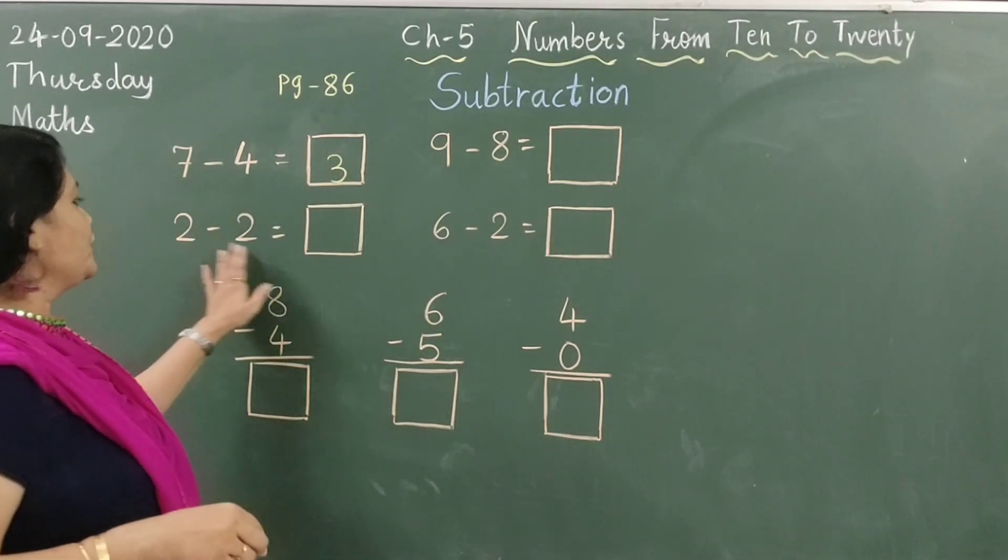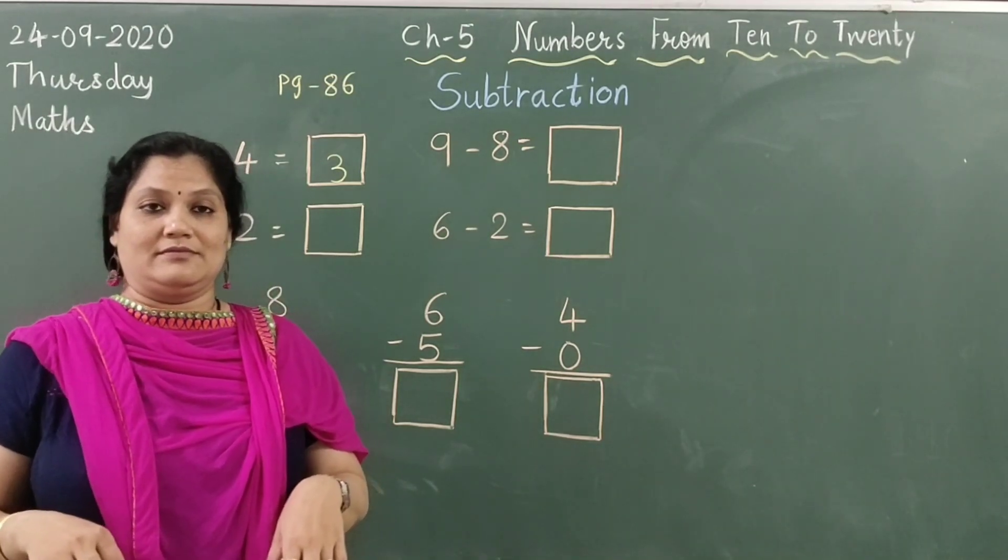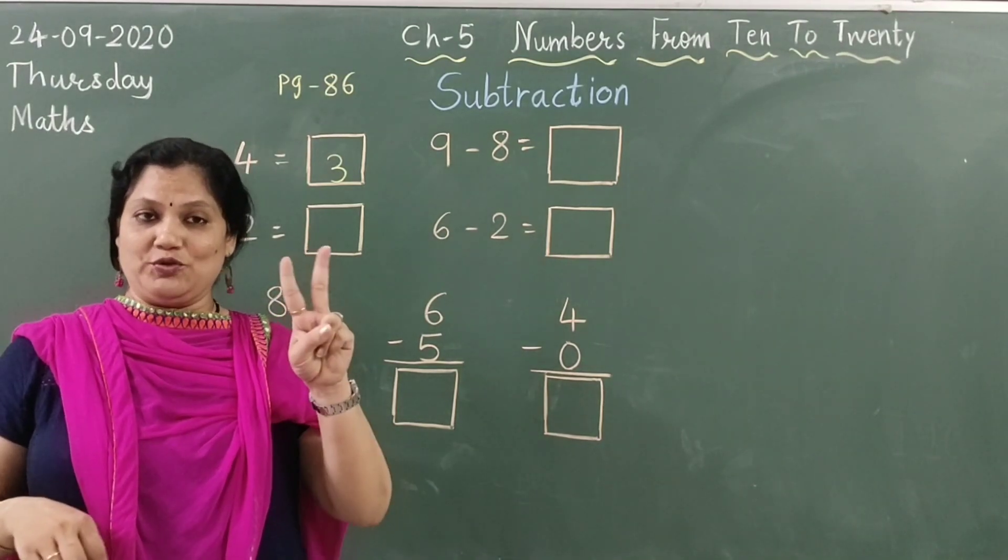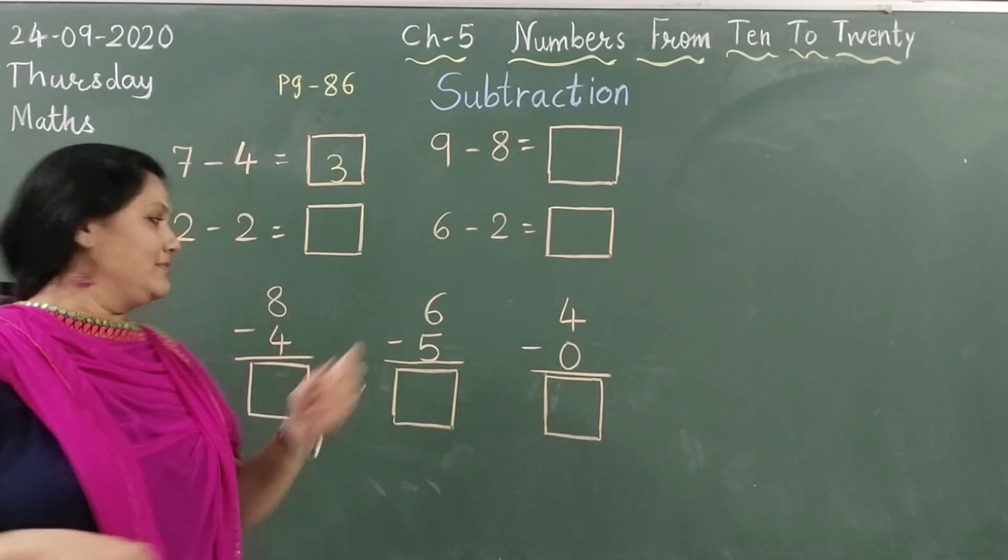Now we have to do 2 minus 2. Same number 2 minus 2. What will it count? 0.